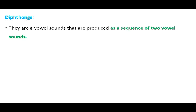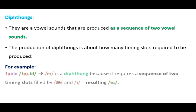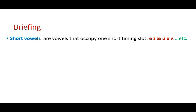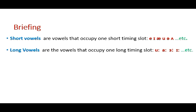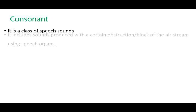The third category is diphthongs. Diphthongs are the vowel sounds that are produced as a sequence of two vowel sounds. Unlike short and long vowels — whose production is related to how much time they require — diphthongs are about how many time slots they require. For example, in the word 'table,' the vowel 'a' is a diphthong because it occupies two time slots: 'a' and 'e.' Generally speaking, short vowels occupy one short time slot, long vowels occupy one long time slot, and diphthongs occupy two time slots.